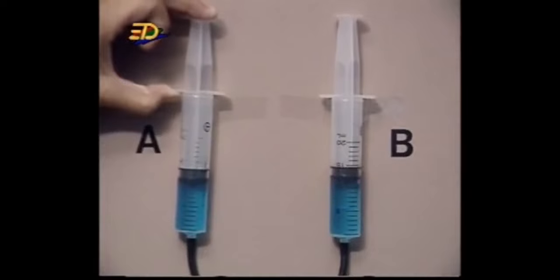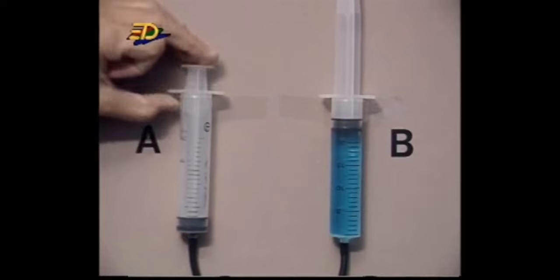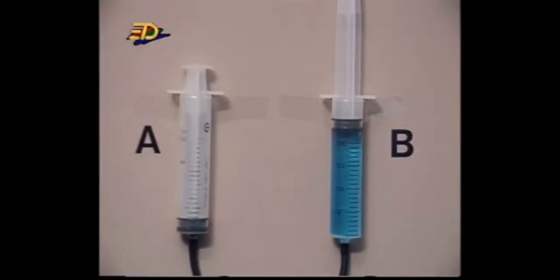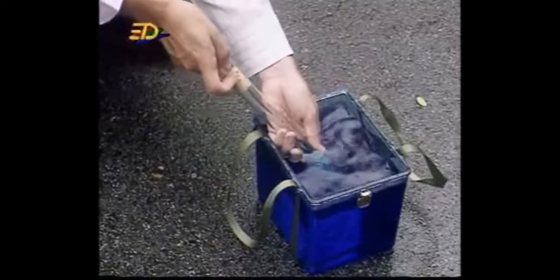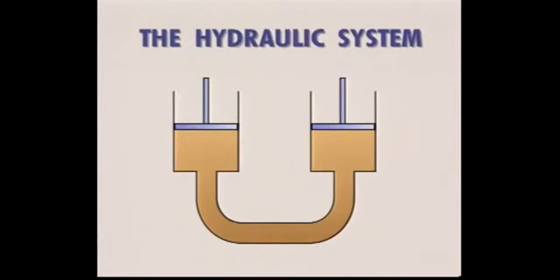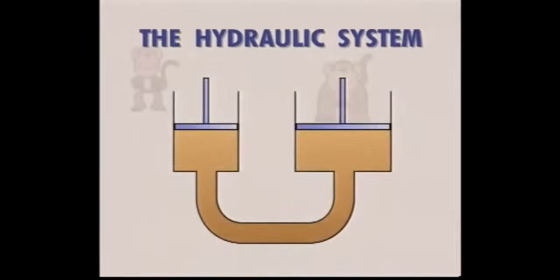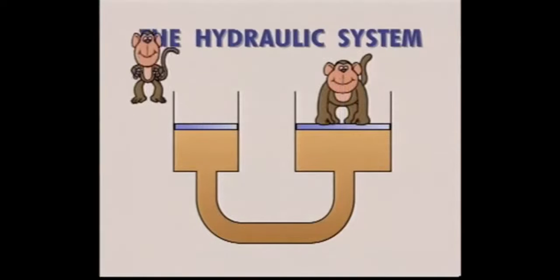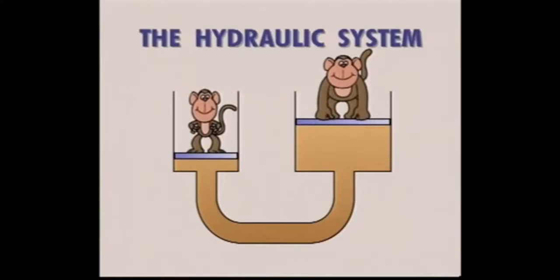Water from syringe A moves to syringe B, shown by the upward movement of the piston in B. This demonstrates both facts: pressure is transmitted equally to all parts of the liquid, and liquid cannot be compressed. The hydraulic system makes use of these two facts. Mathematically, if we make one piston much larger than the other, the larger piston can raise a larger load — the hydraulic system is therefore a force multiplier.